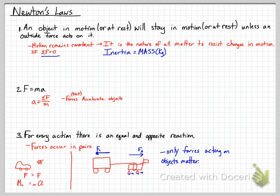When we draw the forces on the horse, we draw only the forces acting on that object. We have the force of the horse moving forward, the force of friction with the ground propelling it with the hooves, and then the carriage pulling back on the horse. Only the forces acting on objects matter.